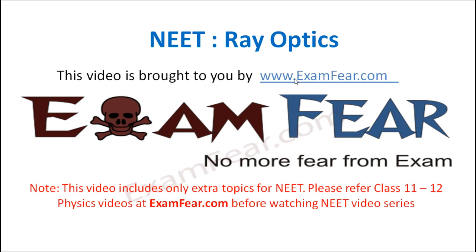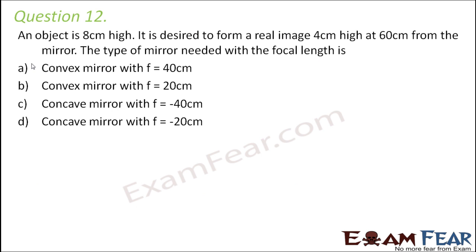Hello friends, this video on ray optics is brought to you by examfure.com. Example number 12: an object is 8 centimeters high. It is desired to form a real image 4 centimeters high at 60 centimeters from the mirror. The type of mirror needed with the focal length is to be determined.